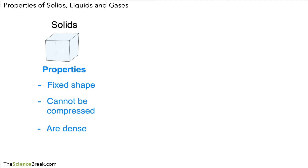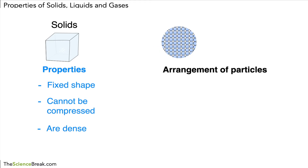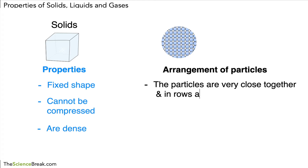Thirdly, solids are dense, which means they have quite a high mass for the volume that they have. So those are three important properties of solids. Let's take a look at the arrangement of particles. I'm sure you've seen a diagram like this before — the particles in the solid are arranged very close together, in neat rows and columns. Sometimes we call this a lattice structure.